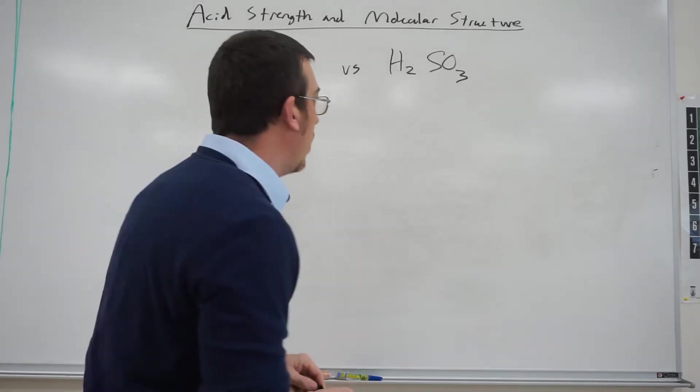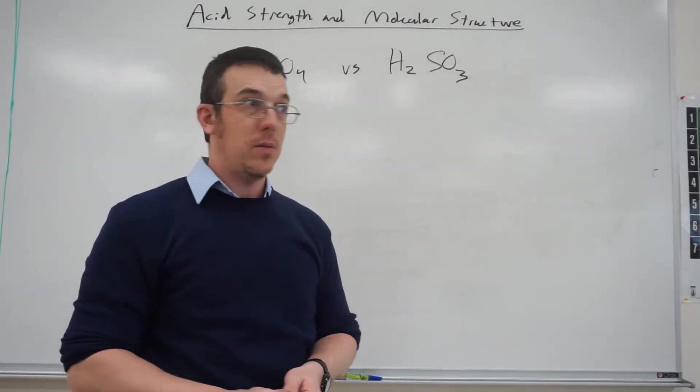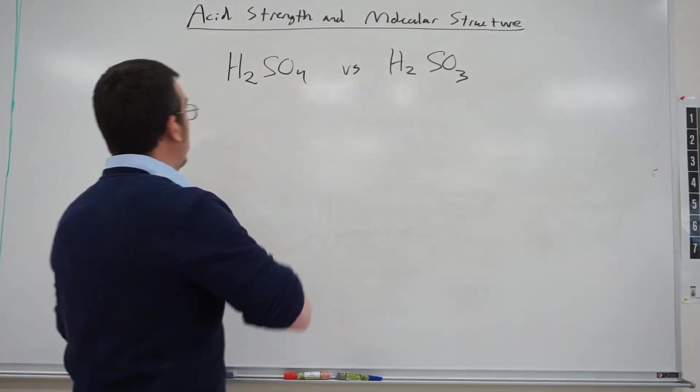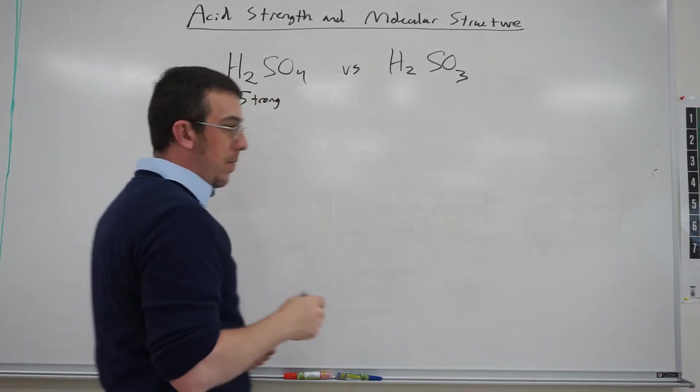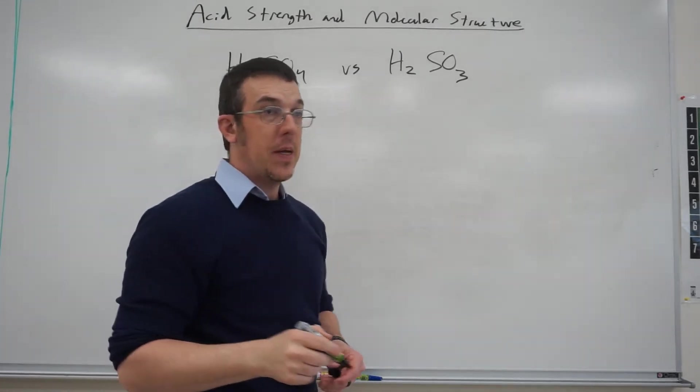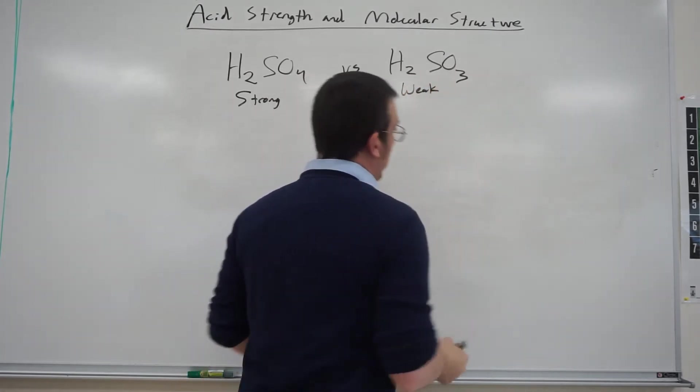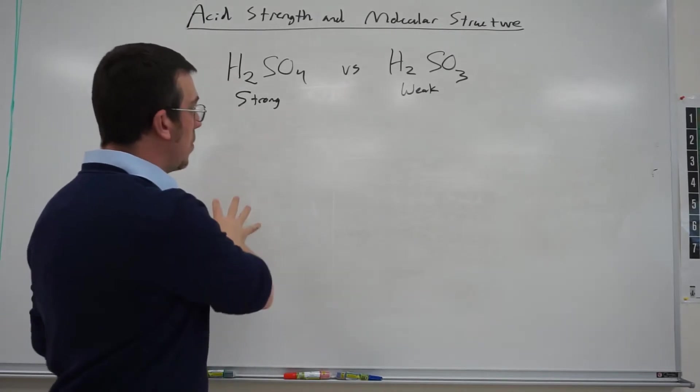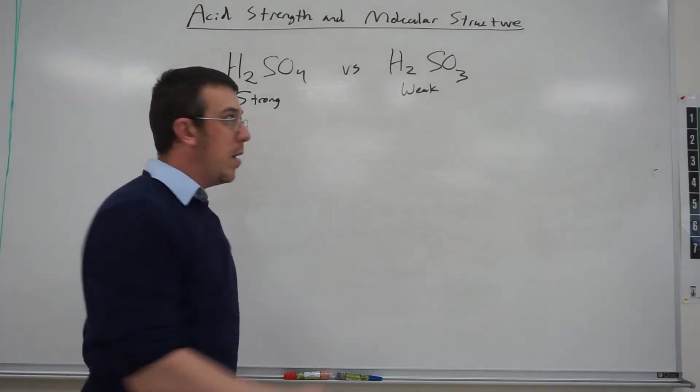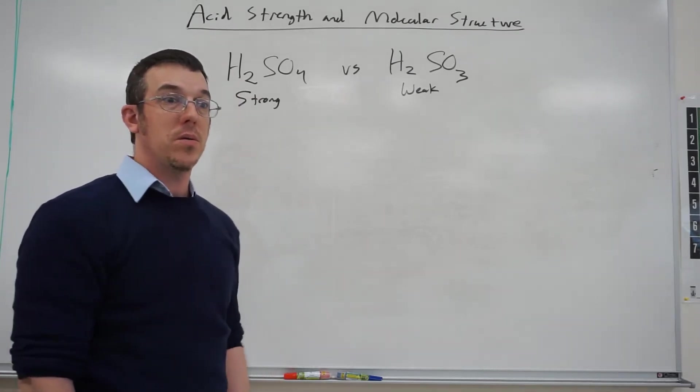So if we go back and we look at our list of strong acids, we're going to find that H2SO4 is a strong acid, and then if you go look in the tables for your weak acids, you'll find that H2SO3 is a weak acid. So we see that one's strong and one's weak. Why is this one weak and this one's strong? What makes the difference between those two?